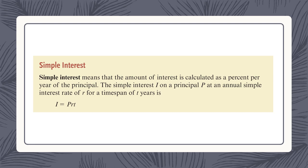Here's our first formula. You will have a formula sheet for this chapter so you won't have to memorize these formulas, and I will give you this same formula sheet at the final exam. What's important is that you know how to use these formulas. You will need to have memorized what all the letters represent. Simple interest means that the amount of interest is calculated as a percent per year of the principal.